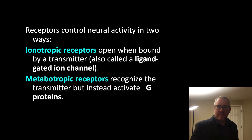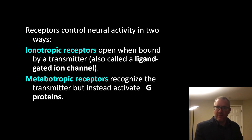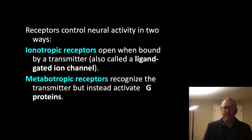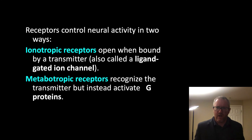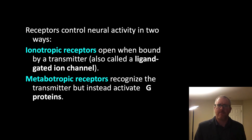The neurotransmitter action on the receptor is really determined by the receptor rather than the neurotransmitter. While we typically think of glutamate as an excitatory neurotransmitter and GABA as an inhibitory one, there are developmental conditions and periods of time where GABA can actually be excitatory. That really is due to the receptor rather than the neurotransmitter. There are two main flavors of receptors in the brain: ionotropic and metabotropic.